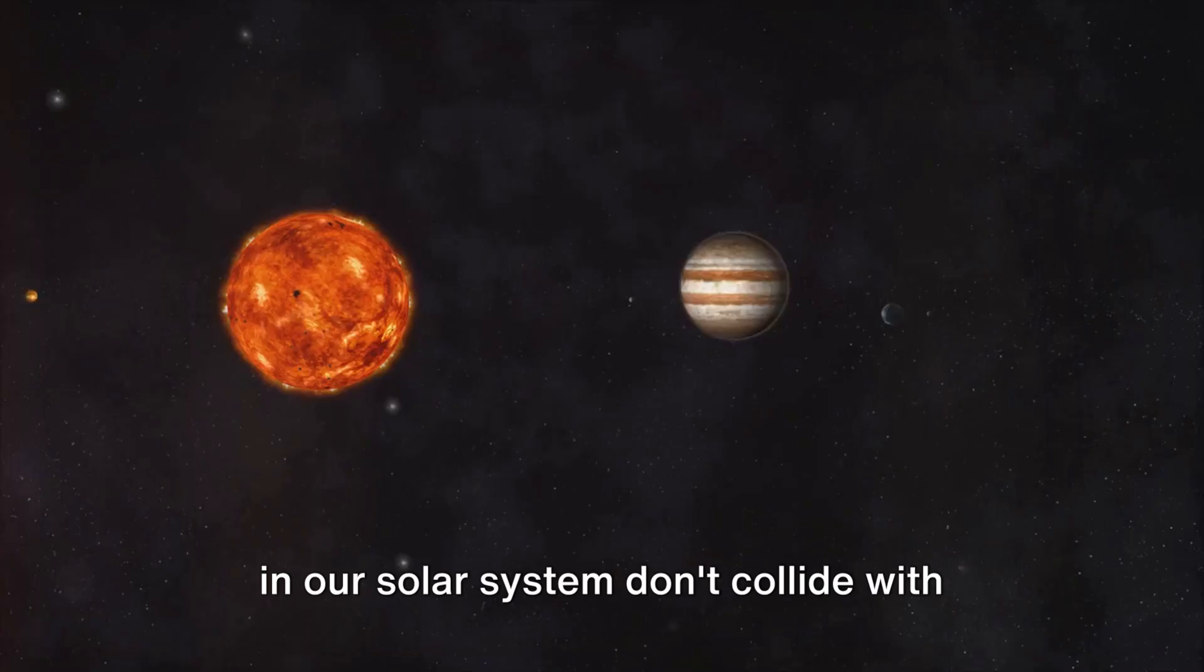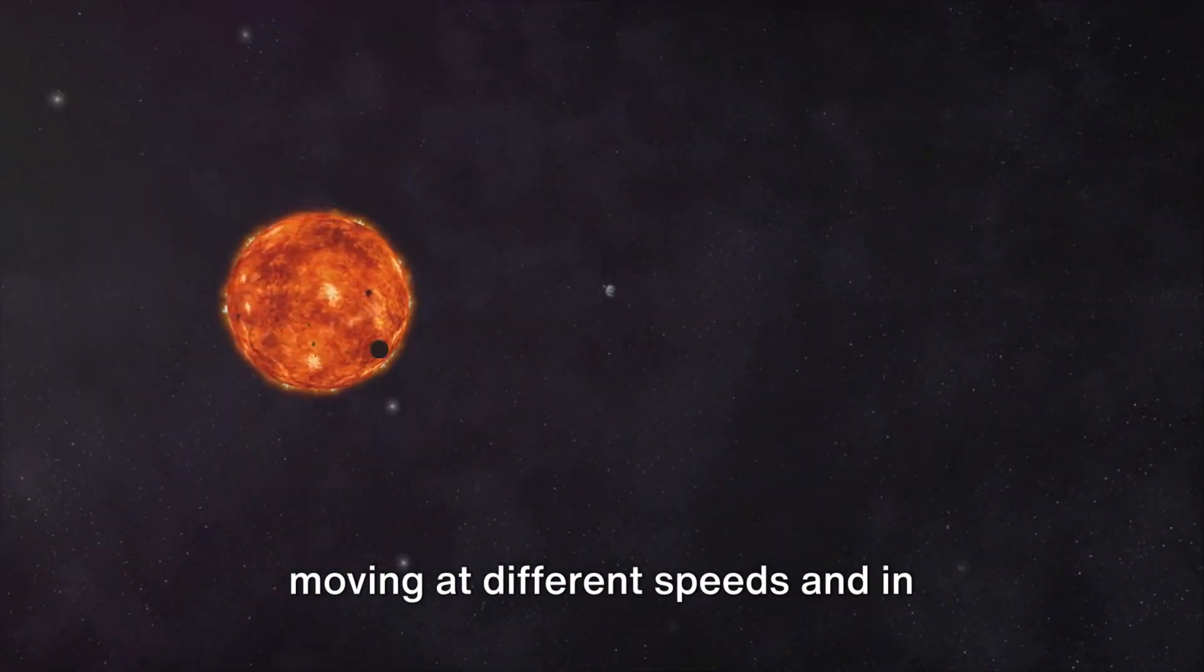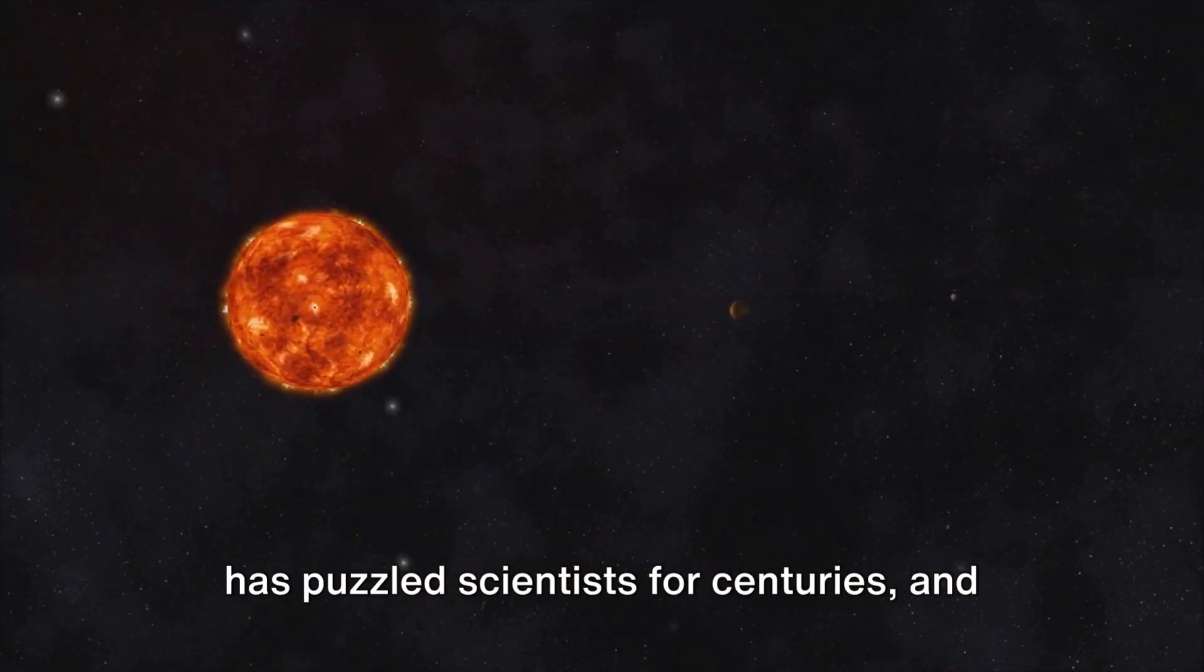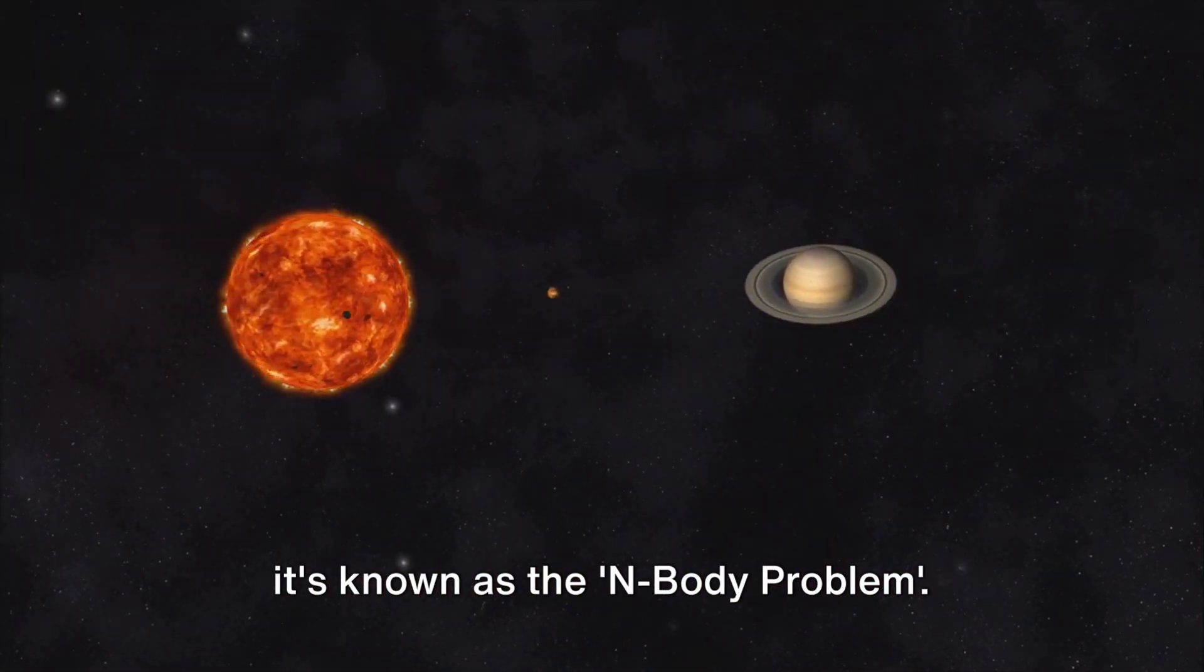Have you ever wondered why the planets in our solar system don't collide with each other, even though they are all moving at different speeds and in different directions? It's a question that has puzzled scientists for centuries, and it's known as the N-body problem.